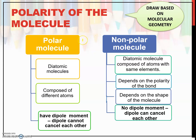For polarity of the molecule, to determine whether a molecule is polar or non-polar, first you have to draw it based on molecular geometry using VSEPR theory. For a polar molecule, it must have a dipole moment where the dipole moments cannot cancel each other. For a non-polar molecule — a diatomic molecule with the same element — it depends on polarity and shape, and the symmetry of the molecule. The molecule must have zero dipole moment where dipole moments can cancel each other.